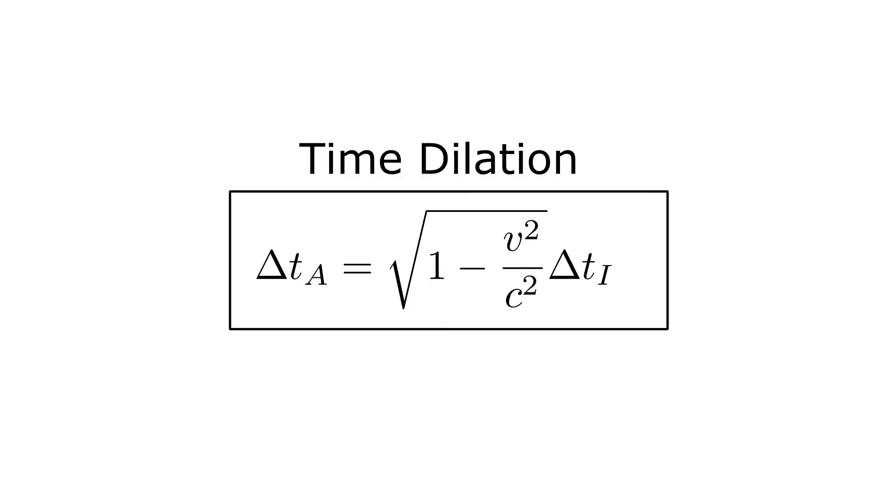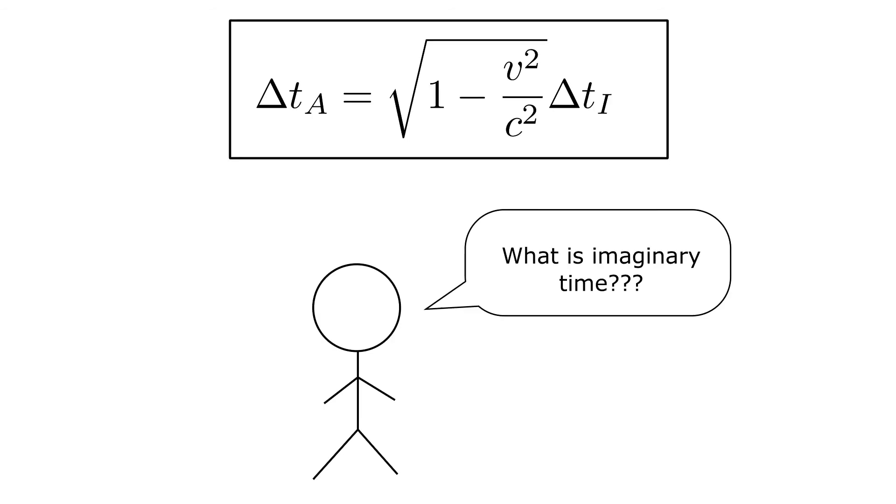Another important observation of the time dilation equation is that the value of v squared over c squared is subtracted from 1. Since an imaginary time doesn't really make sense in this context, the speed of light is acting like a speed limit, since the ratio of v over c can't be greater than 1. So we have come to the conclusion that nothing travels faster than the speed of light.